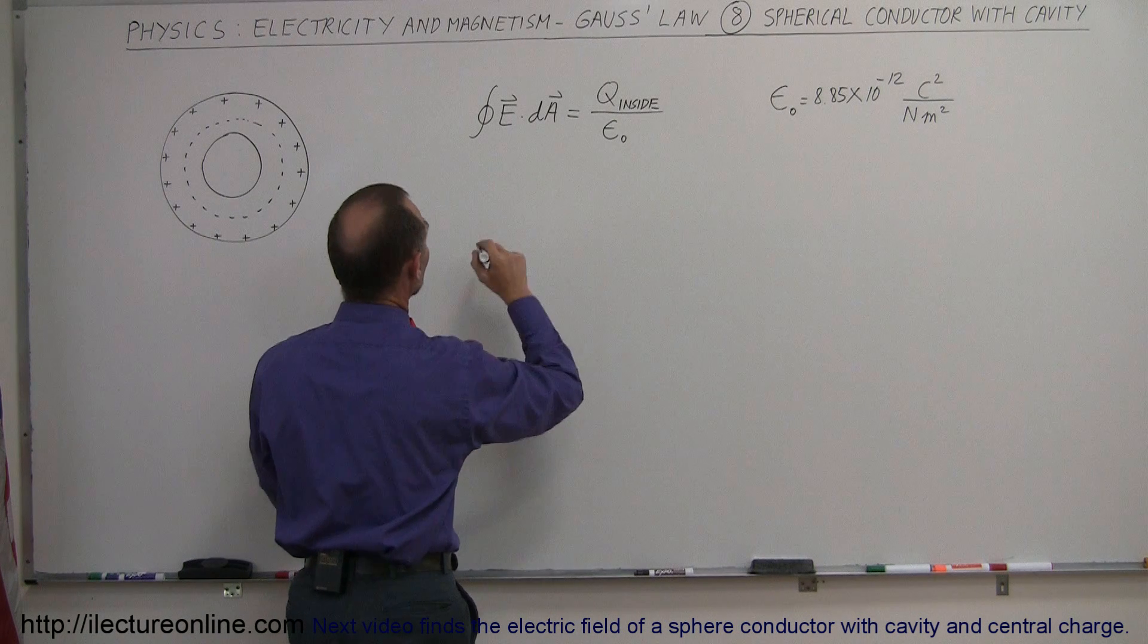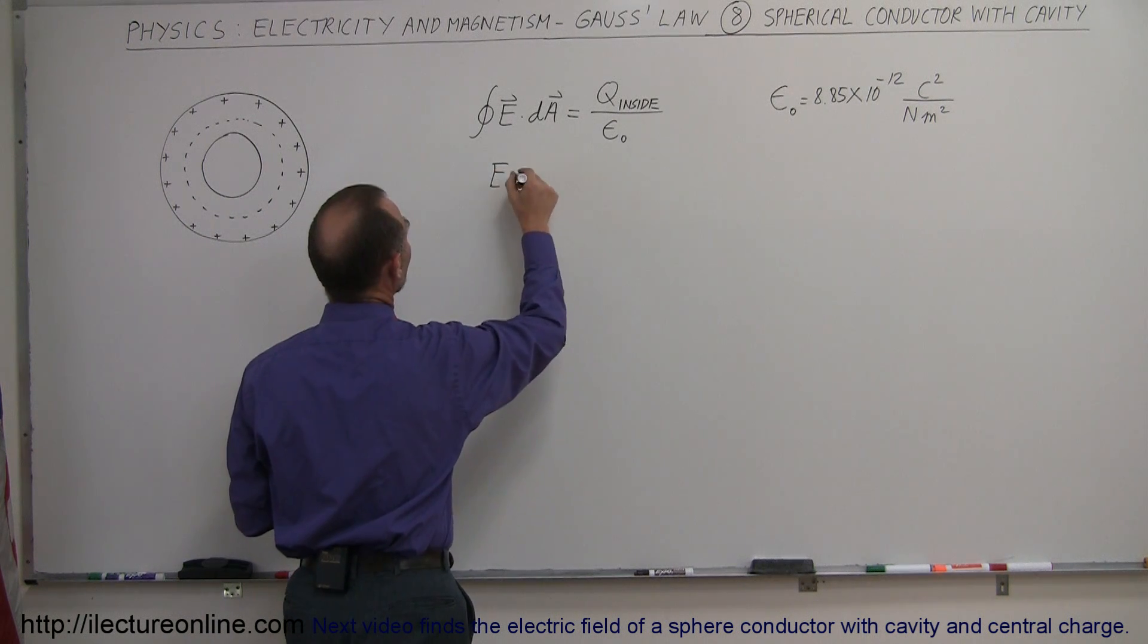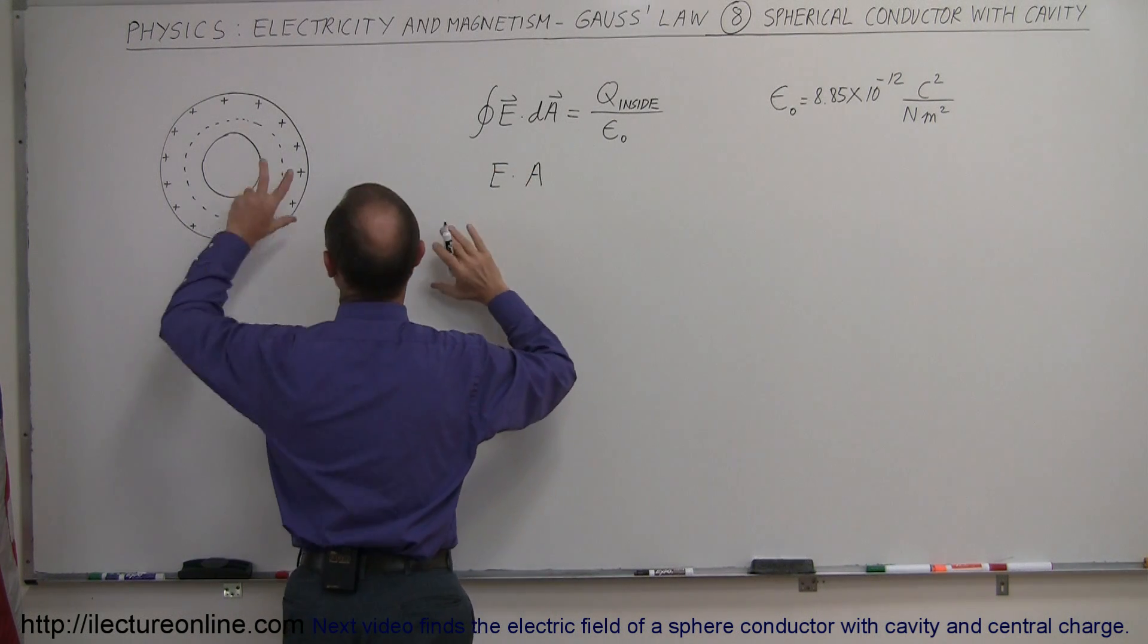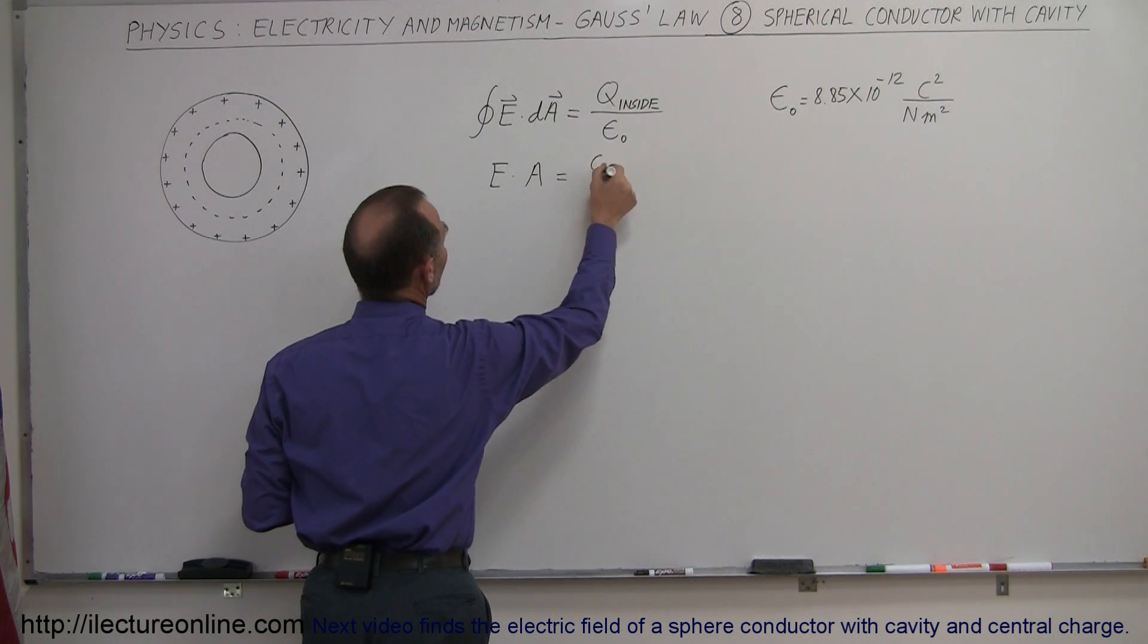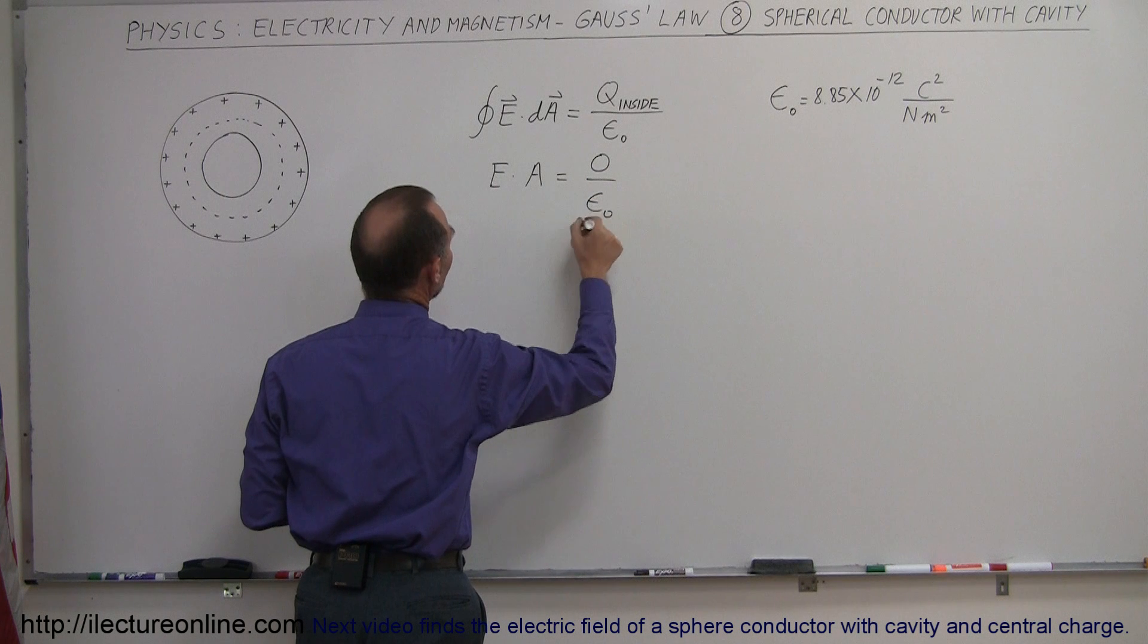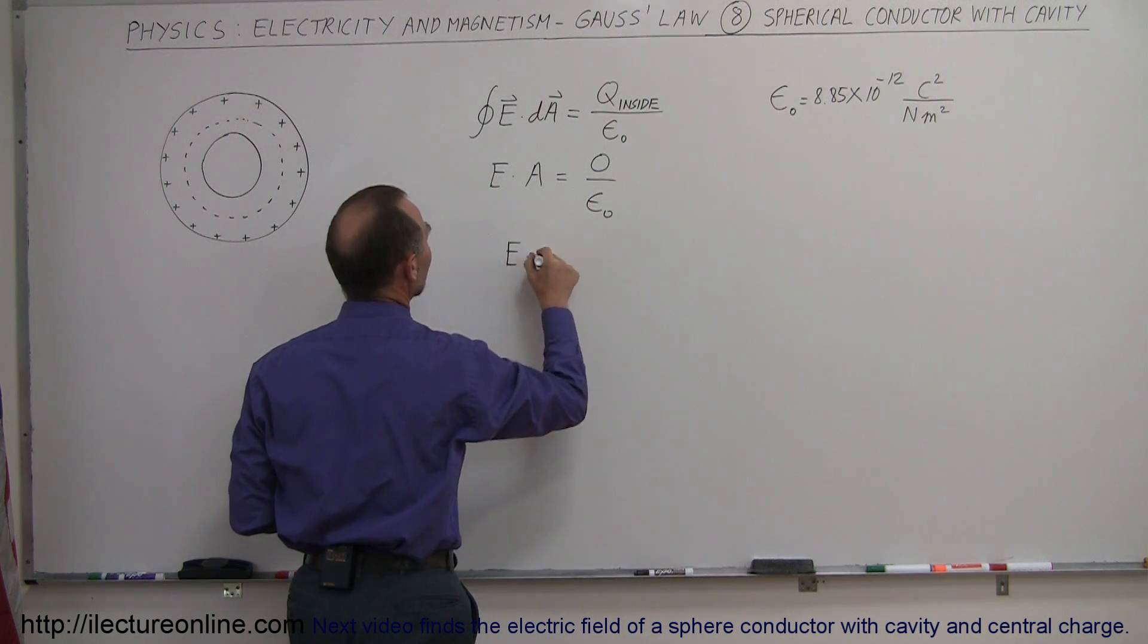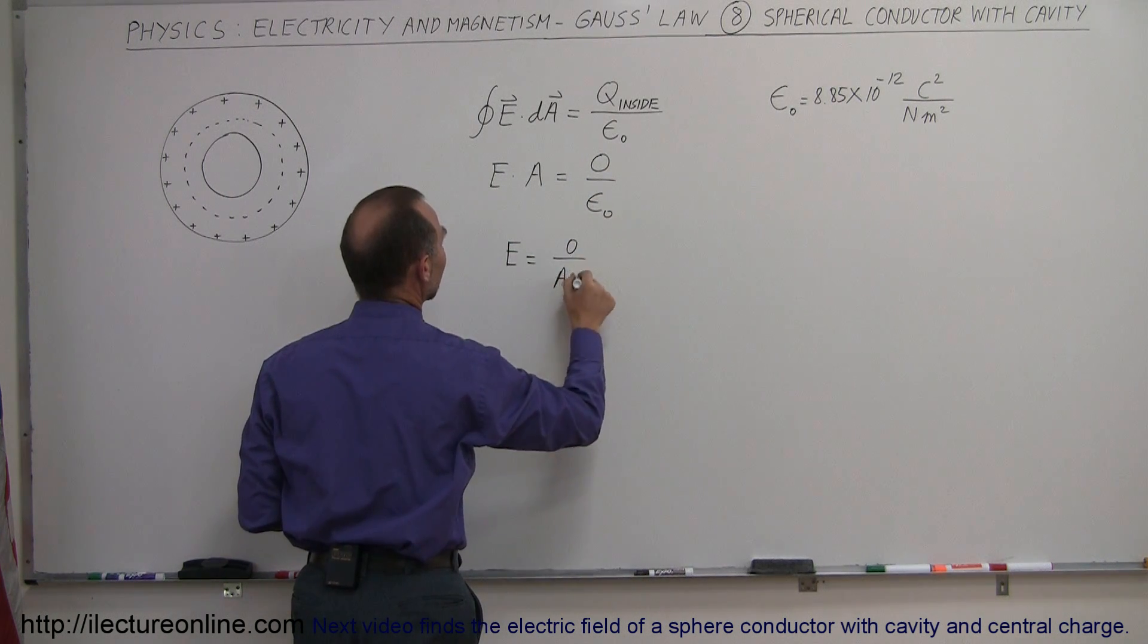We can then say that E dot A, or E times the area of the Gaussian surface, will be equal to Q inside divided by epsilon naught. But Q inside is zero divided by epsilon naught. So therefore, the electric field is simply equal to zero divided by A times epsilon naught.